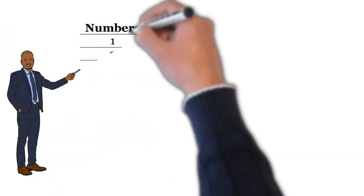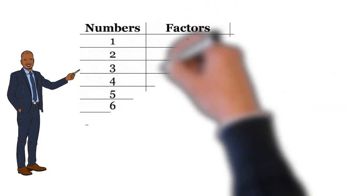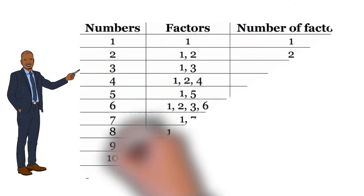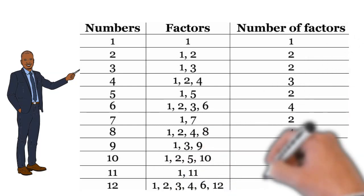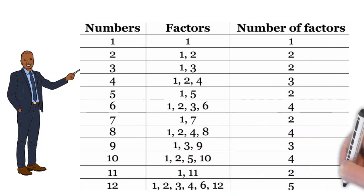Number 1 has factors 1, number of factors 1. Number 2 has factors 1, 2, number of factors 2. Number 3 has factors 1, 3, number of factors 2. Number 4 has factors 1, 2, 4, number of factors 3 and so on.